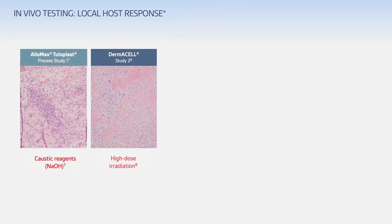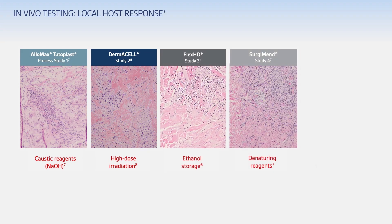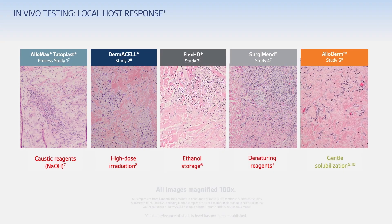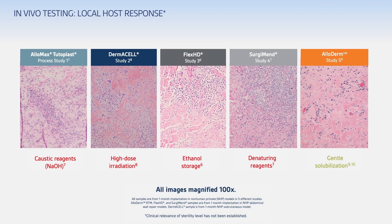Here is a histological comparison of various ADMs after one-month implantation in five different animal studies. These images reveal a spectrum of host responses. The ADMs that were stored in alcohol, subjected to high-dose irradiation, or processed with damaging reagents show evidence of an excessive inflammatory host response.